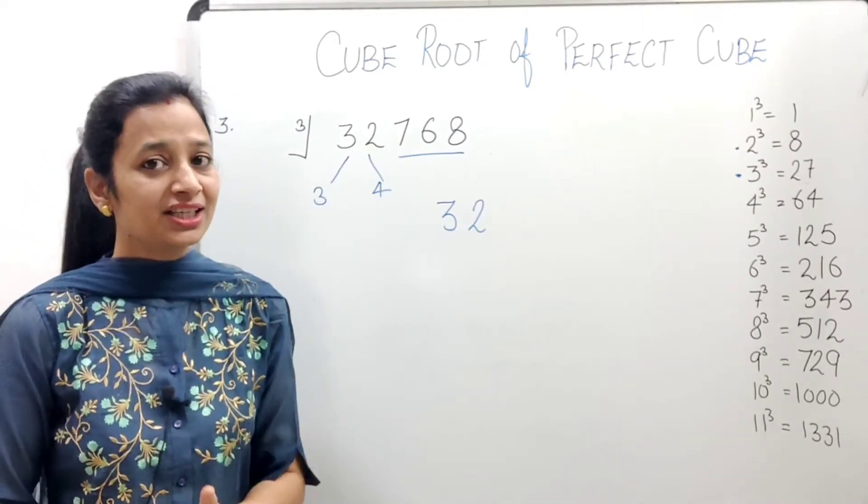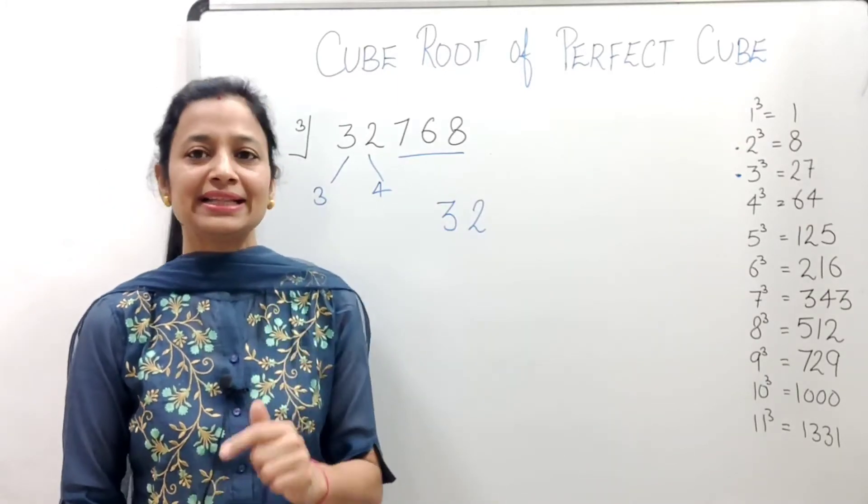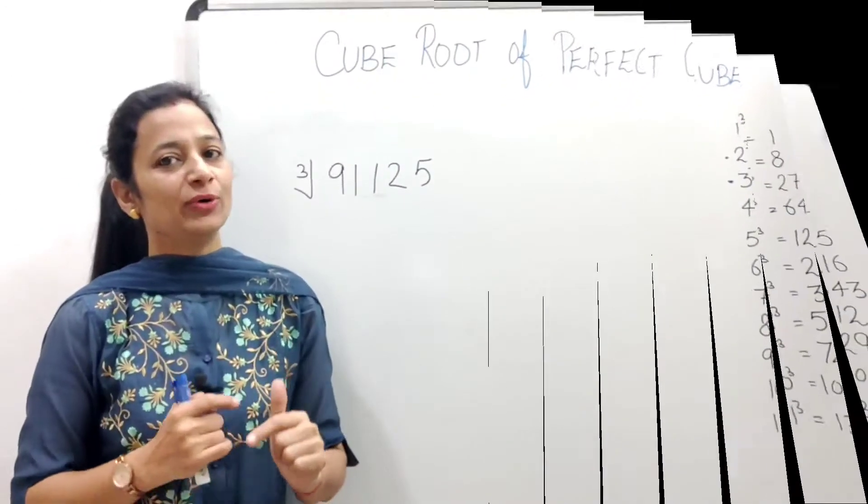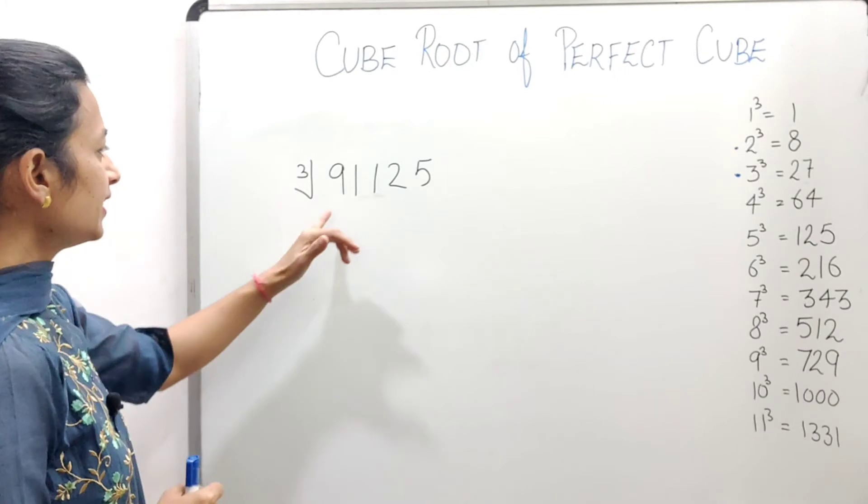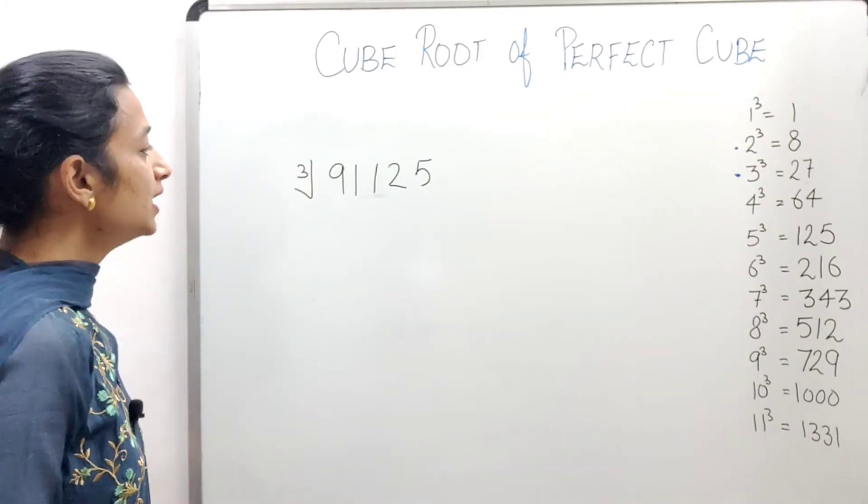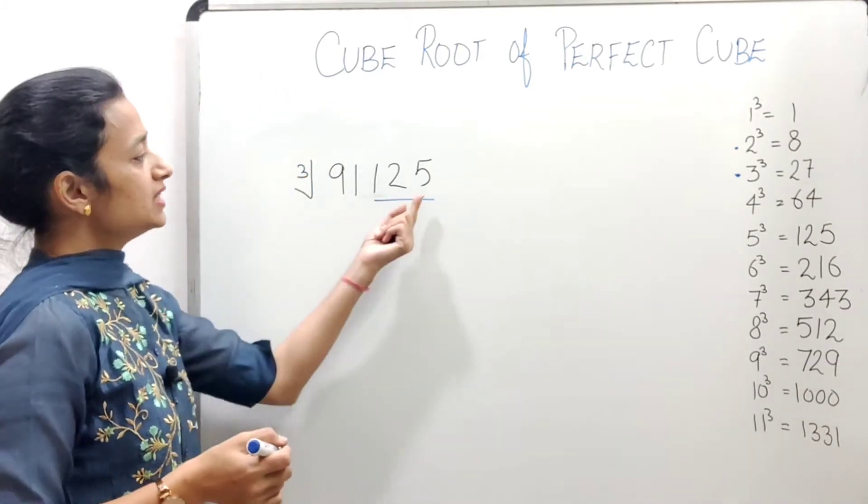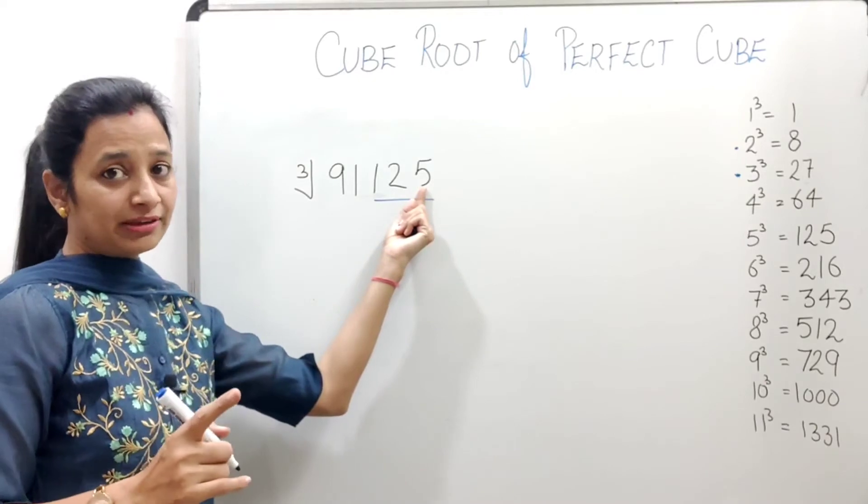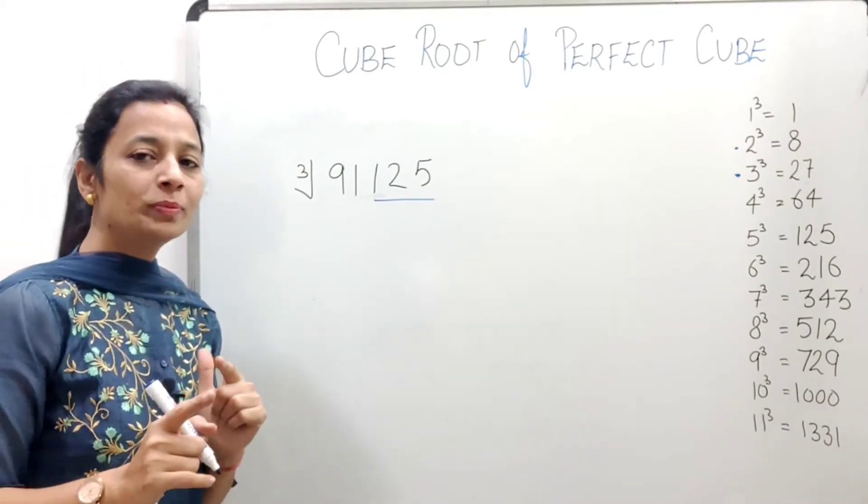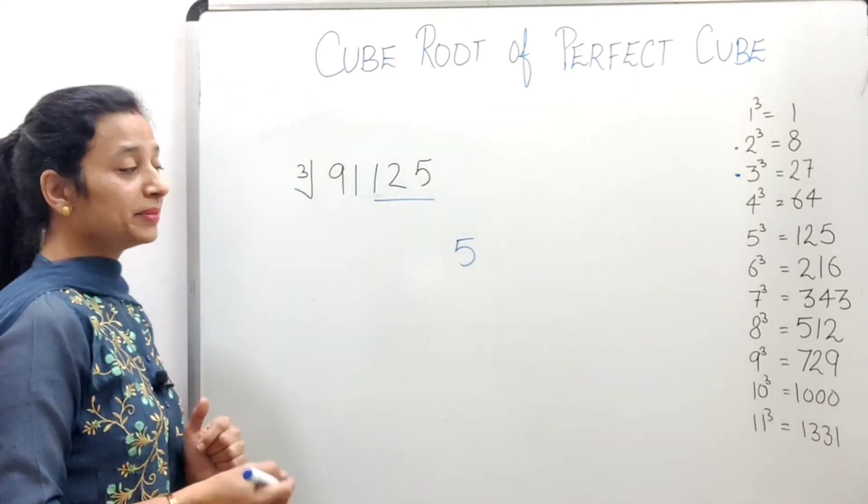I hope you understand. If you understand, don't forget to like the video. Let's take some more examples. Next example is 91125. We have to find its cube root. Again, we will do grouping. So 125 is in one group. Its first digit is 5. And if we cube 5, we get the same digit. So 5 will come in the answer.